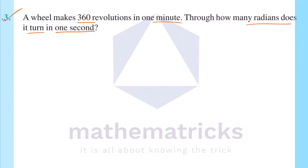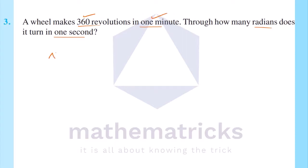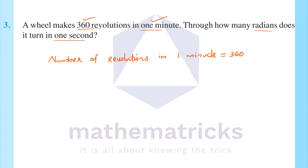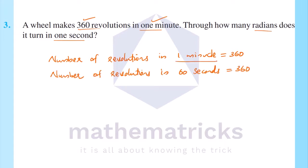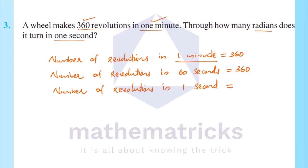Number of revolutions in one minute is equal to 360. That means number of revolutions in 60 seconds is 360. So the number of revolutions in one second is equal to 360 divided by 60, which equals 6. Number of revolutions in one second equals 6.